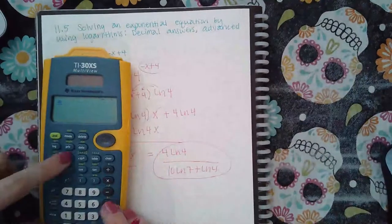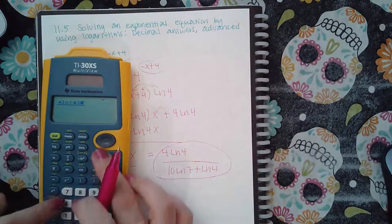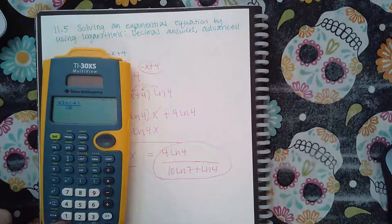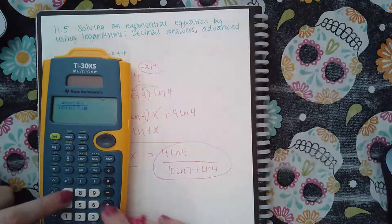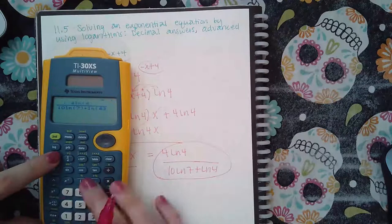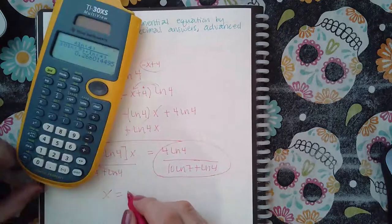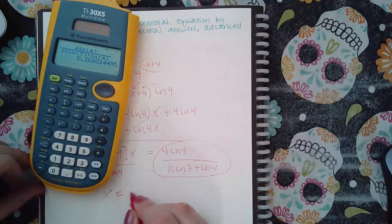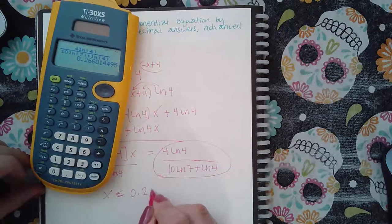Now, because it does want decimals, I can just plug all this into the calculator: 10 ln(7) plus ln(4). And I get x equals 0.266.